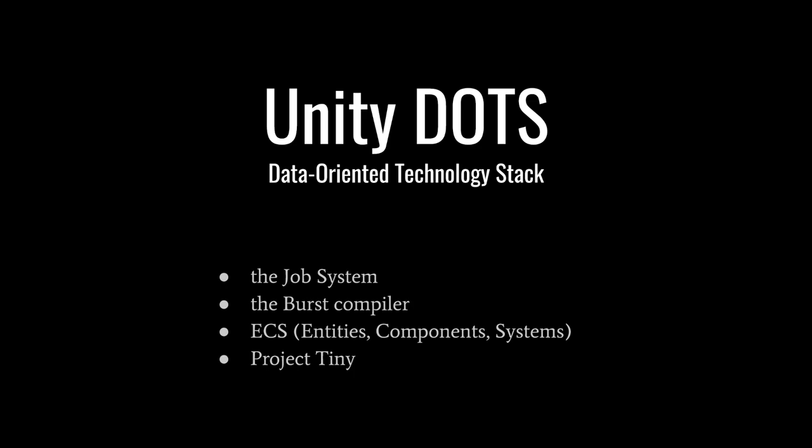ECS is a new way of structuring data and code that avoids the performance and organization problems of Unity's conventional game objects. The E stands for Entity, which is a logical ID. The C stands for Component, which is a piece of data associated with an entity. And the S stands for System, which is a unit of code executed in the game loop.